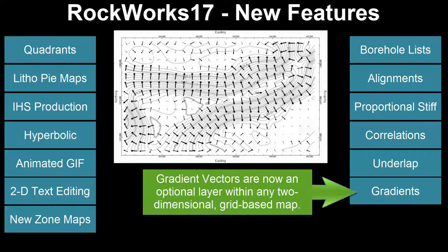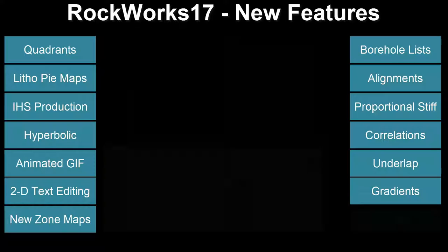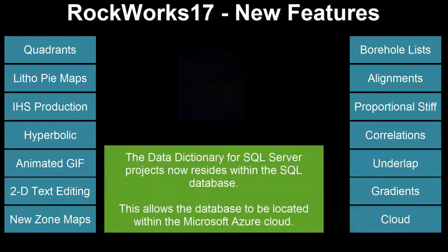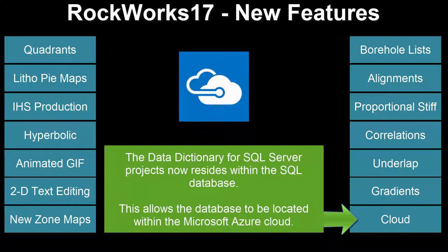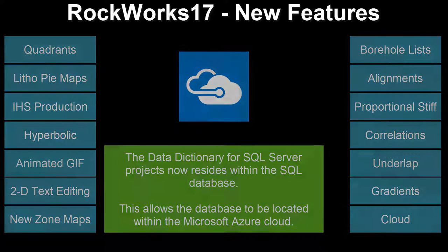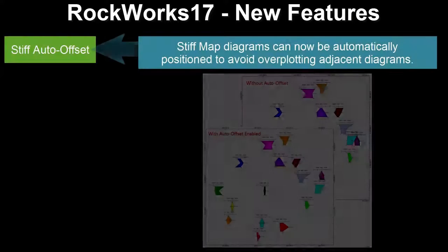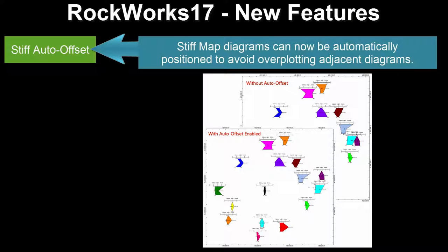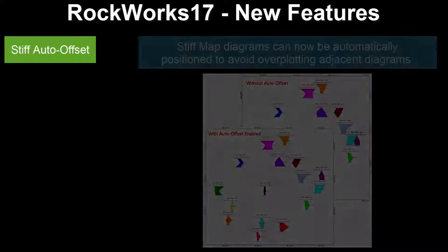Gradient vectors are now an optional layer within any two-dimensional grid-based map. The Data Dictionary for SQL Server projects now resides within the SQL database, allowing the database to be located within the Microsoft Azure cloud. Stiff map diagrams can now be automatically positioned to avoid over-plotting adjacent diagrams.